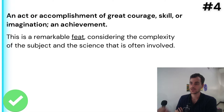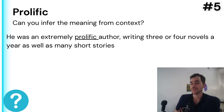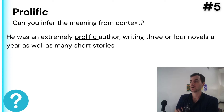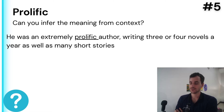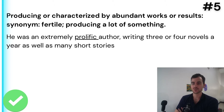Number five: 'prolific.' 'He was an extremely prolific author, writing three or four novels a year, as well as many short stories.' What kind of word is 'prolific'? It's an adjective — it describes a noun. He's a prolific author. The second part of the sentence tells us more: he writes three or four novels a year. Is that a lot? Yes, it is. So 'prolific' has to do with writing a lot. The definition: producing or characterized by abundant works or results. Somebody who writes a lot is prolific.